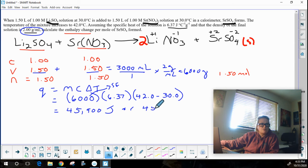Or 45.9 kilojoules. So I move that decimal 1, 2, 3 places over to the left to get to the 45.9 kilojoules.